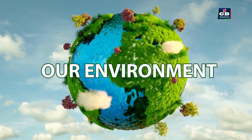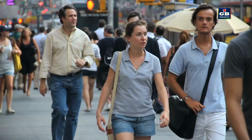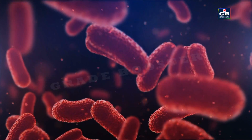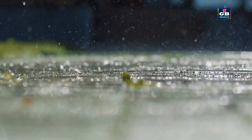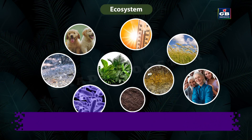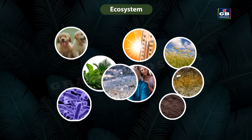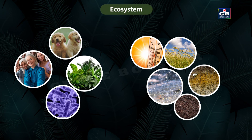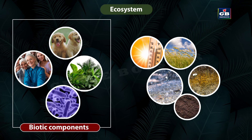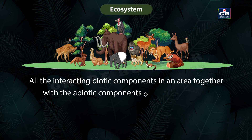In our environment in nature we find plants, animals, human beings, microorganisms, temperature, rainfall, wind, soil, minerals, etc. All these components of the environment interact with one another to maintain a balance in nature. The living components of the environment are called biotic components and the non-living components are called abiotic components.